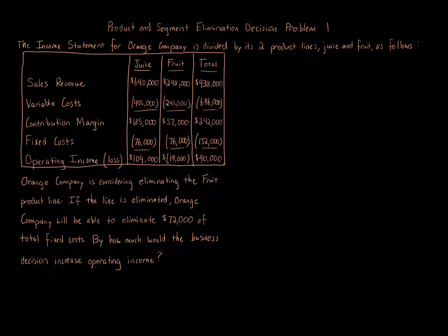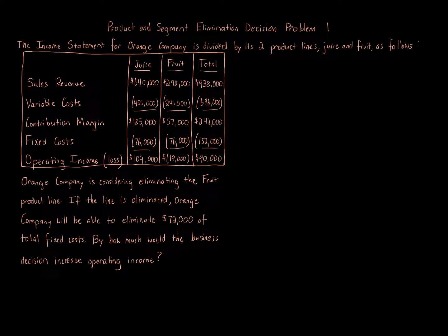Operating income for juice is $109,000, operating loss for fruit is $19,000, for total operating income of $90,000. Orange Company is considering eliminating the fruit product line. If the line is eliminated, Orange Company will be able to eliminate $72,000 of total fixed costs. By how much would the business decision increase operating income?